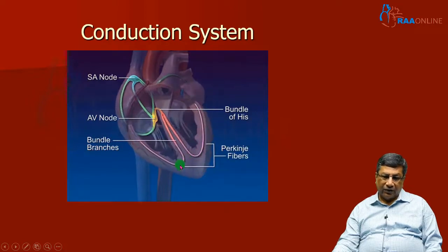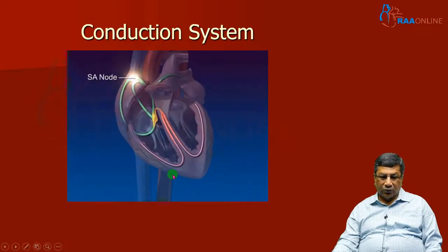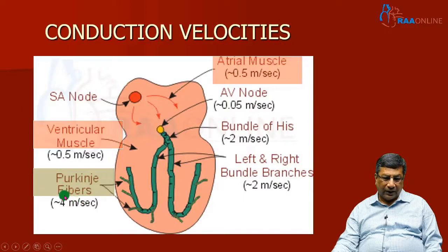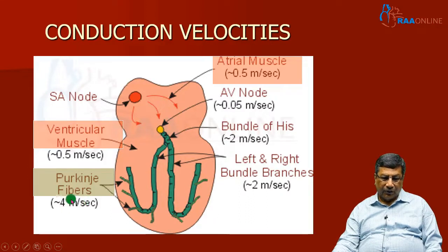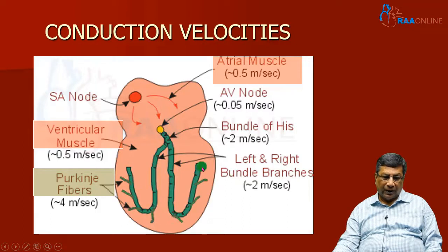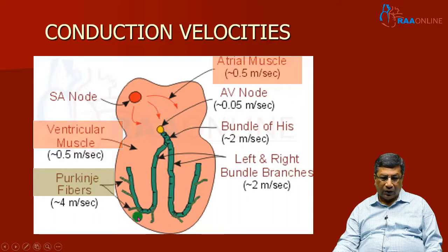That is why the entire ventricular depolarization is over within 0.08 seconds. Both ventricular depolarizations are driven by the specialized conduction system of the heart traveling at 4 meters per second. That is why the QRS is less than 0.08 second — the duration of QRS does not exceed 0.08 seconds because it takes only that long for the entire ventricular myocytes to get depolarized.